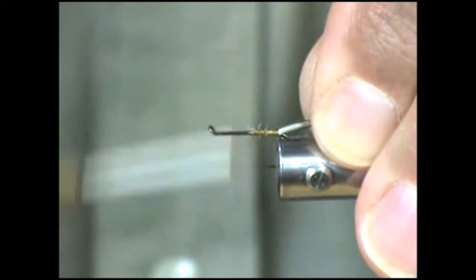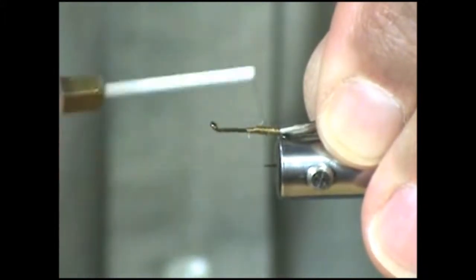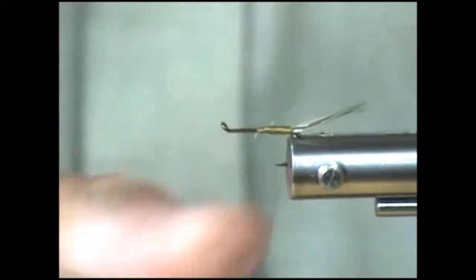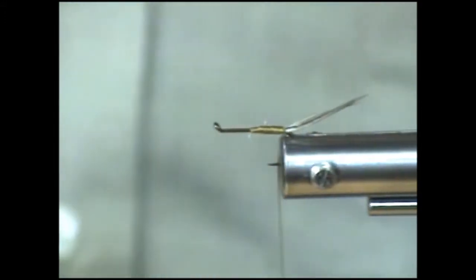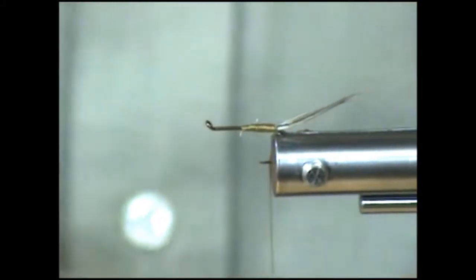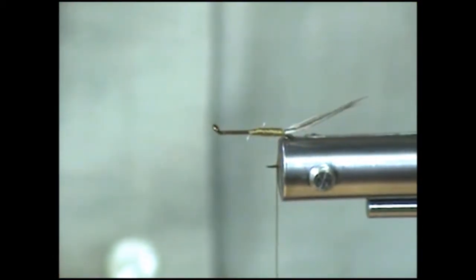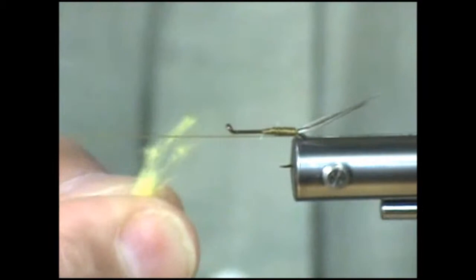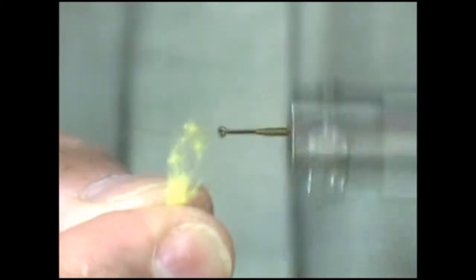Now I'm going to bring the thread back forward and again to the rear, put a nice half hitch knot to hold the thread. Next I'm going to take some homemade yellow dubbing and I'm just going to wind that onto my thread.